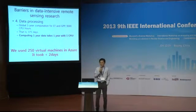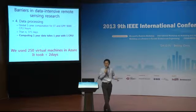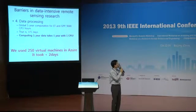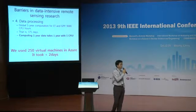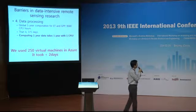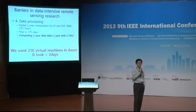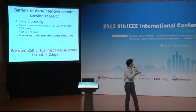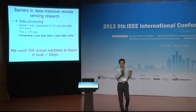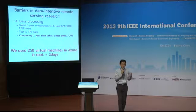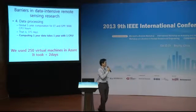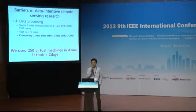The last barrier was data processing. To compute global one-year ET and GPP, we found it took 9,000 CPU hours — that is 375 days. Computing one year of data takes one year with a single CPU, which is impossible during a PhD. So we used 250 virtual machines in Azure and it took less than 2 days. The power of Azure is that it is highly flexible — depending on demand, we can increase the number of virtual machines.